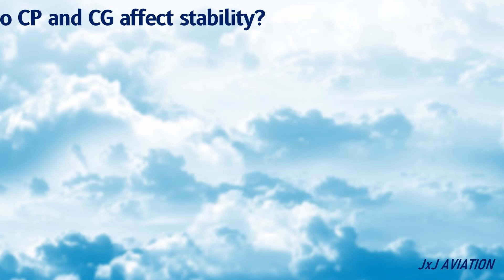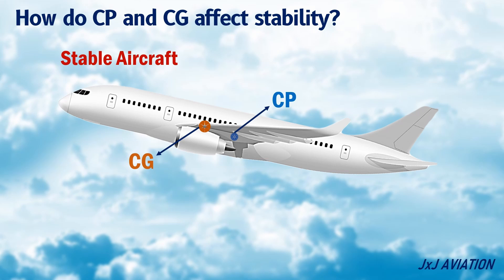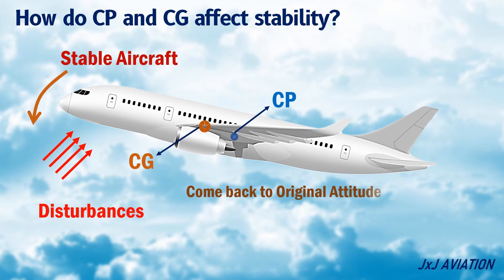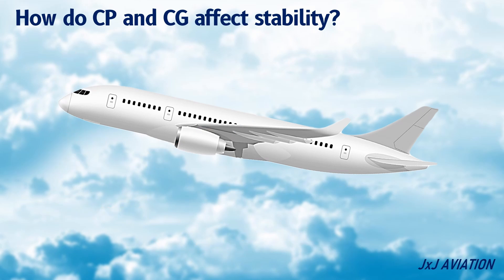It is important to know the movement of the center of pressure because this will have an impact on the stability of an aircraft. How do center of pressure and center of gravity affect stability? For an aircraft to be stable, it must be designed such that the center of pressure always lies behind the center of gravity. This means that if there are any disturbances on the aircraft, the tendency of the aircraft will be to come back to its original attitude. This is called positive static stability. When an aircraft is in flight, even when flying at its maximum positive angle of attack, the center of pressure should always be behind the center of gravity for an aircraft to have positive static stability.